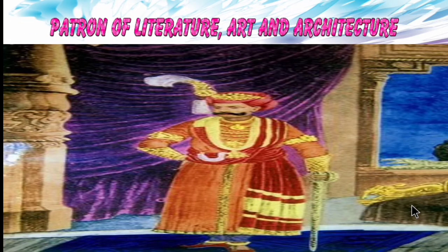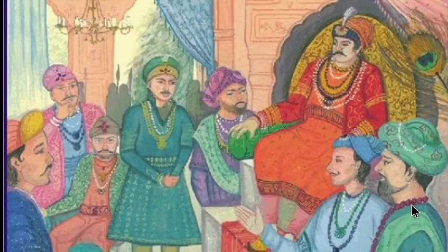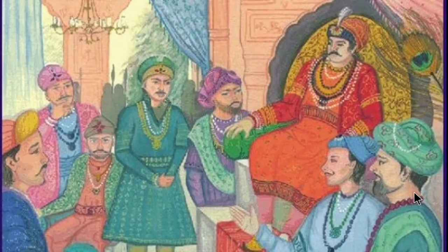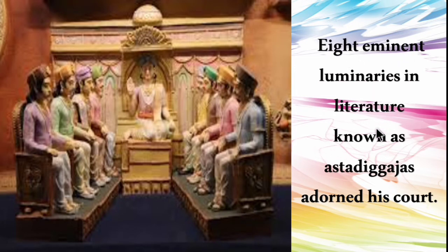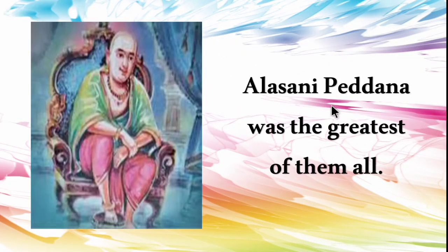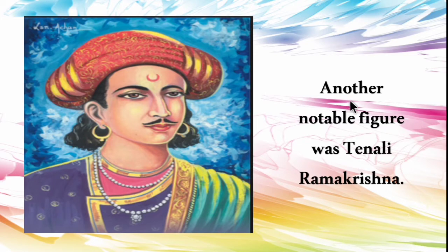Krishna Devaraya was a great patron of literature, art, and architecture. Eight eminent luminaries in literature, known as Ashtadigajas, adorned his court — 'Ashta' meaning eight. Among them, Allasani Pedana was the greatest, and another notable figure was Tenali Ramakrishna.